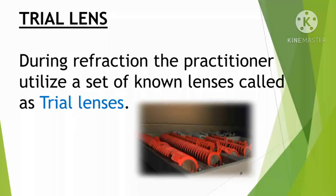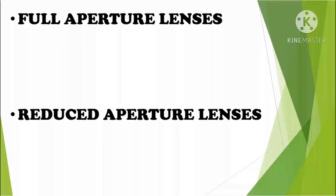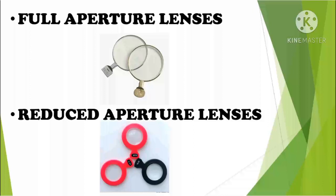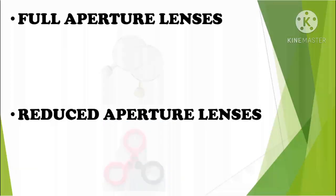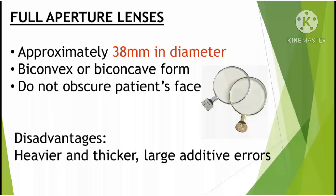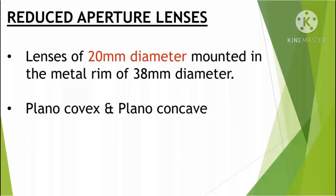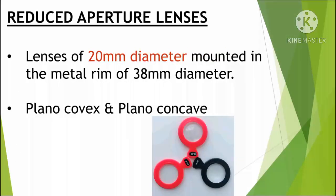Trial lenses are used during refraction time to correct refractive errors. Trial lenses come in two forms: Full Aperture Lens and Reduced Aperture Lens. Full Aperture Lenses have a diameter of 38 mm; they are bi-convex and bi-concave spherical lenses, but they are slightly heavier compared to Reduced Aperture Lenses. Reduced Aperture Lenses have a metal rim on the corners and a lens portion of 20 mm diameter; plano-concave and plano-convex types are both available.